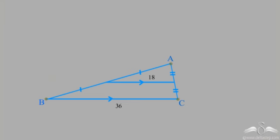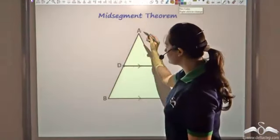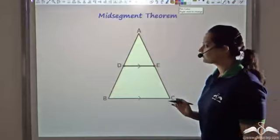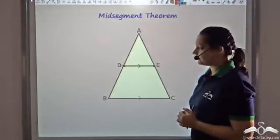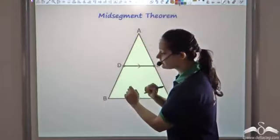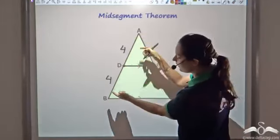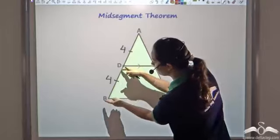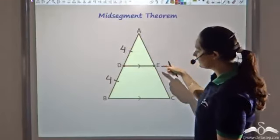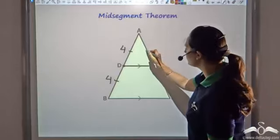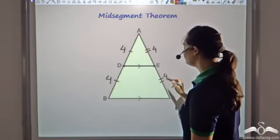Now let us look at this. Say you have triangle ABC where D is the midpoint of AB and E is the midpoint of AC. AB is 8 centimeters in length and AC is also 8 centimeters in length. Since D is the midpoint, it divides AB into two equal parts, so BD equals DA, giving us 4 and 4. Similarly, E is the midpoint of AC, so those two segments are also equal — since AC is 8, we get 4 and 4 again.